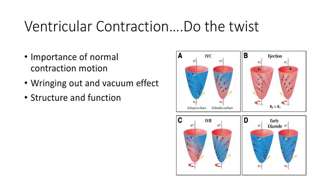An important thing to remember: when the heart contracts, it rotates and wrings. It twists — the sub-epicardium, the most superficial layer, twists over the sub-endocardium to create a wringing-out effect, like taking a sponge and twisting to squeeze everything out. That's basically how the ventricles contract. When they relax, they unwind, which creates almost a vacuum effect — a negative pressure — that helps draw blood in during early diastole. That suction effect from the unwinding helps draw blood back in.